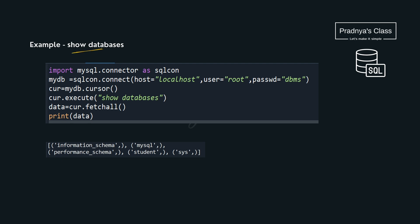Here we are writing a program which will show the databases. The first step is to import mysql.connector, the second step is to connect, and the third step is to create the cursor object — these three steps will be the same. In the fourth step we execute the query using the cursor object, followed by fetching the records. Here we are fetching all the records and printing them. Look at the output — we get a list of tuples of all the databases because the query is SHOW DATABASES.